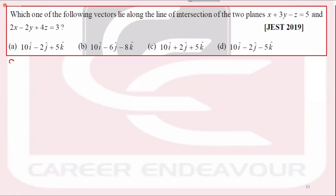Next, please try this question. It's a 2019 question. Which one of the following vectors lies along the line of intersection of two planes — this one and this one?